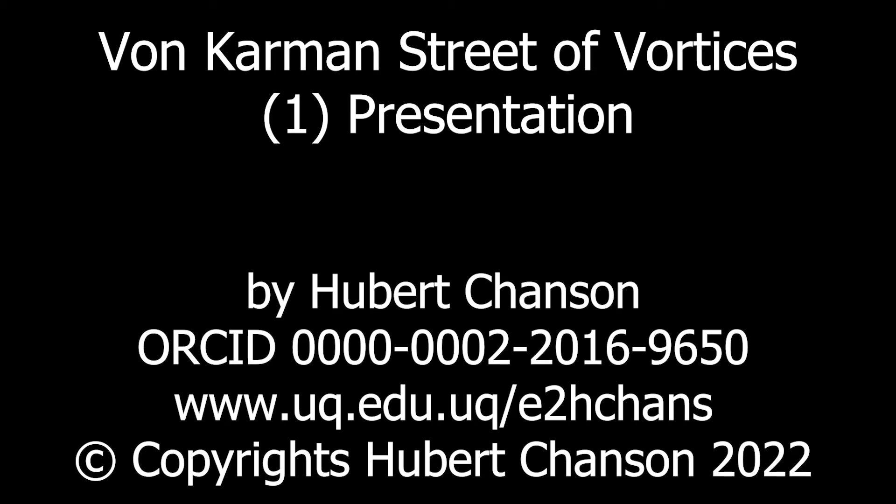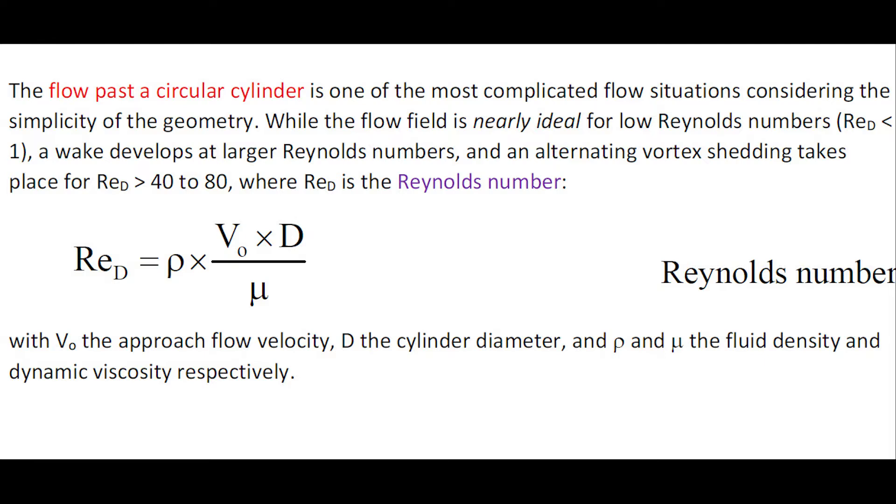The flow past a circular cylinder is one of the most complicated flow situations considering the simplicity of the geometry. While at very low Reynolds number, the flow is like an ideal flow.